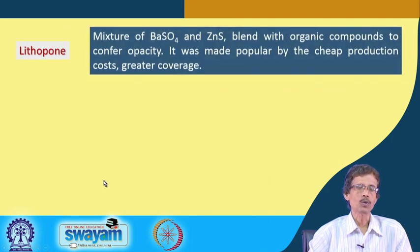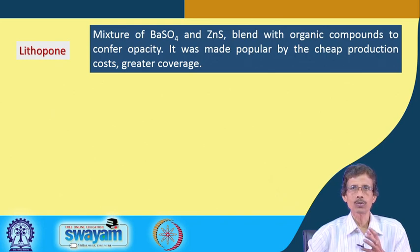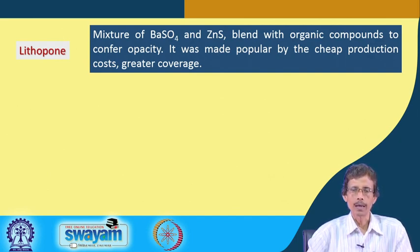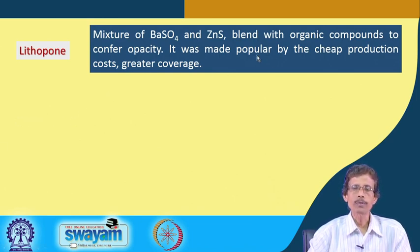Lithopone is a mixture of barium sulfate and zinc sulfide, blended together. Sometimes an organic compound of adhesive nature is used as a binder to achieve uniform mixing of these two solid compounds, providing the opacity required for use as a paint material.